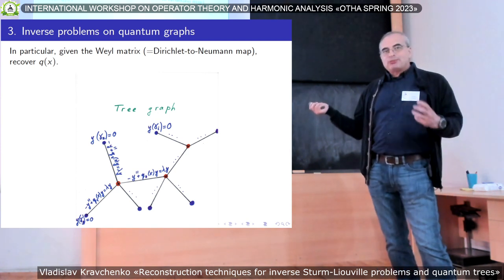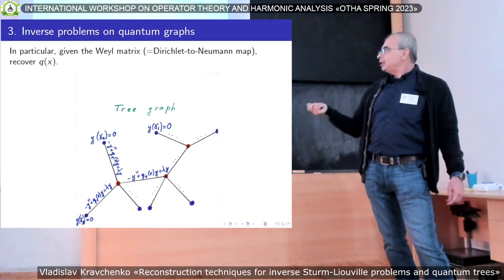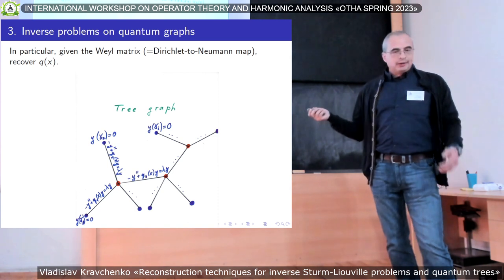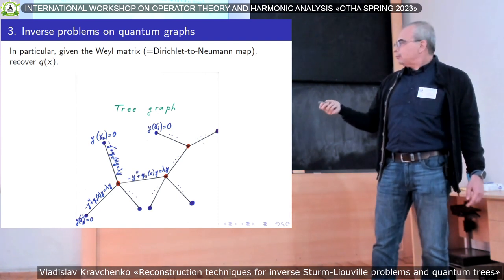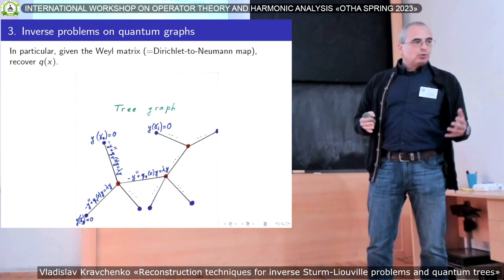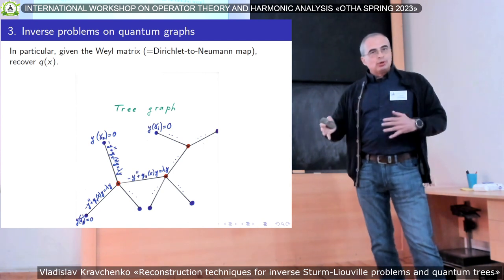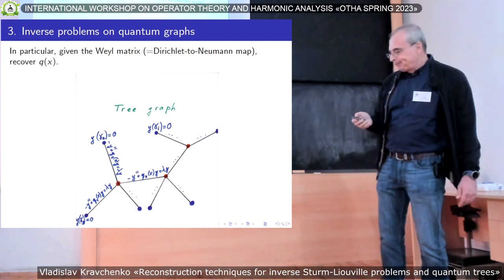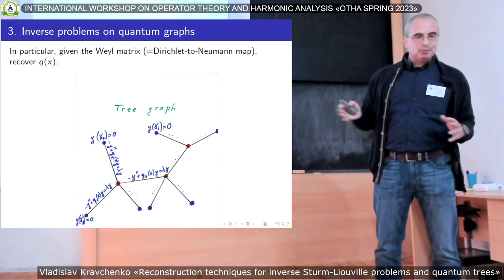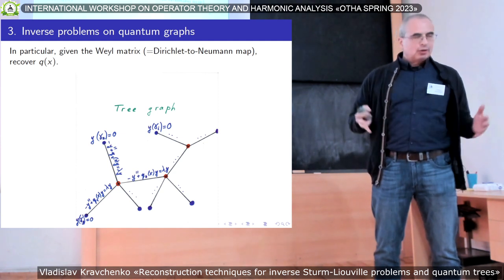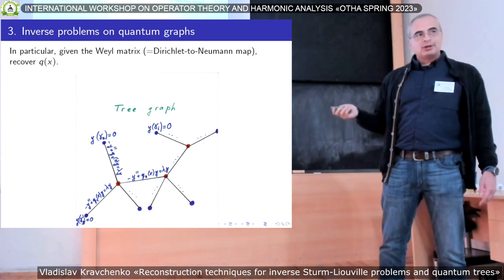We have a differential equation on each edge of the graph, some conditions at the boundary of the graph, and some compatibility conditions at the interior vertices. From some information, we should recover the potentials on each edge. More specifically, in this talk, I will consider the problem of recovery of these potentials from the so-called Weyl matrix, which is nothing but the Dirichlet-to-Neumann map of the graph. These three problems are not the whole set of problems which can be solved by the approach I will present today.